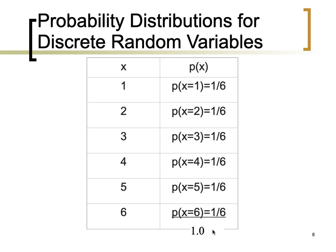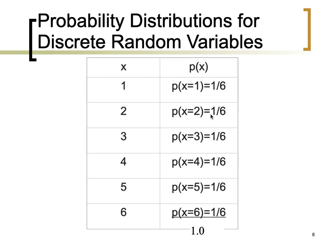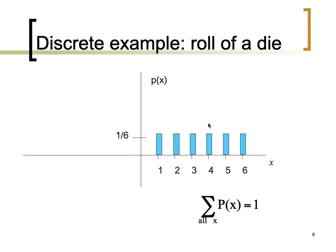Summing up all of these probabilities gives a sum equal to one, so we have satisfied the two properties of a probability distribution for discrete random variables. Another way to represent the probability distribution is by a histogram, where the height of each bar indicates the probability value. Along the x-axis we have the die outcomes one through six, each bar has height one sixth, and summing all bars gives a total equal to one. If asked for a probability table you produce the table; if asked for a probability histogram you produce the histogram.